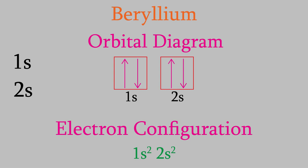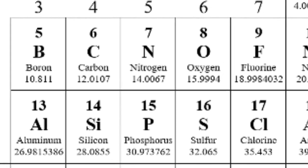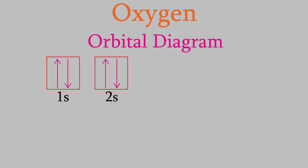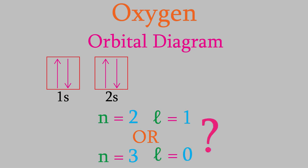So far we've looked at atoms that only have electrons in s orbitals. The orbital diagrams look a bit different when we have other kinds of orbitals. For example, let's try the orbital diagram of an oxygen atom. Oxygen has eight electrons. From the work we just did with beryllium, we know that the first four will be in a 1s orbital and a 2s orbital. But what comes next? The electrons still want the lowest energy by having the lowest possible values of n and l. We could keep n equals 2 and move to l equals 1, or we could bump n up to 3 and keep l at zero. Which one is correct?